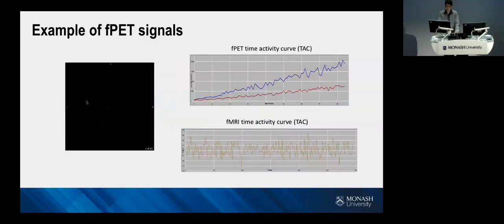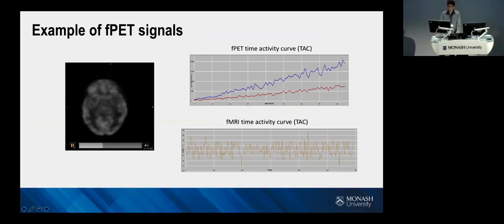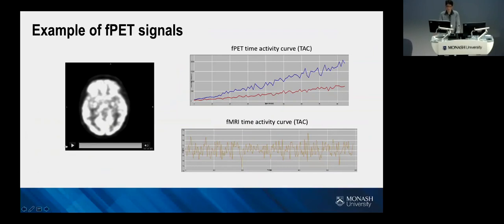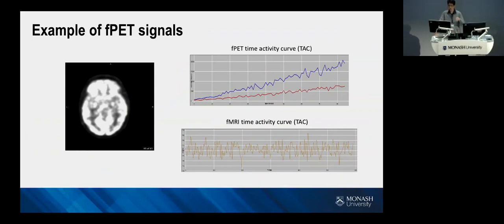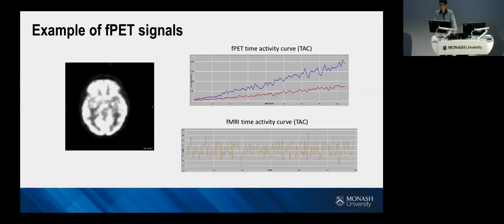Here is an example of an fPET signal based on 100 embolus FDG injection over a 95-minute scan. The first 10 frames are removed due to very low count. We find that the dynamic PET image shows an increasing trend, which we believe is a cumulation effect of FDG. The time-activity curve is demonstrated here — the blue voxel is from gray matter and the red is from white matter. Both show a ramp-like accumulation trend, and the gray matter has a faster accumulation rate than the white matter. This difference generates contrast in the fPET image.